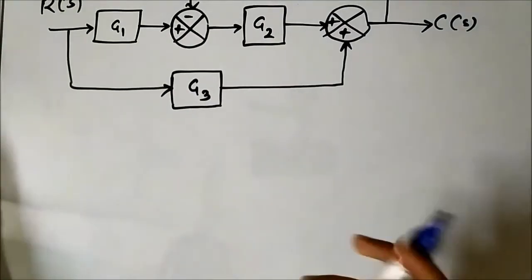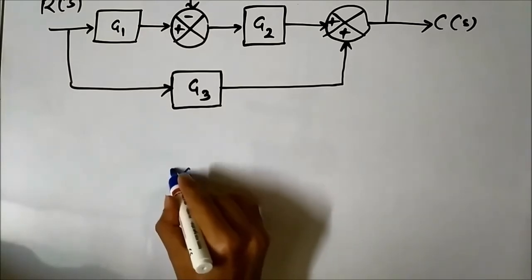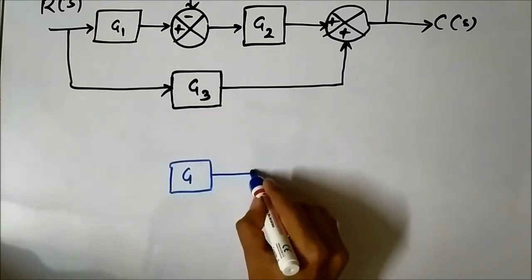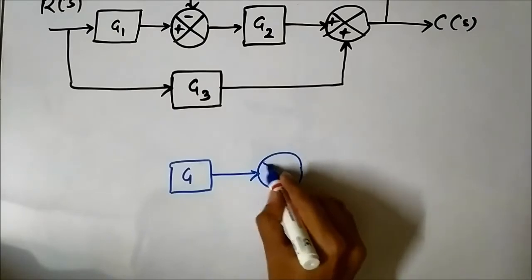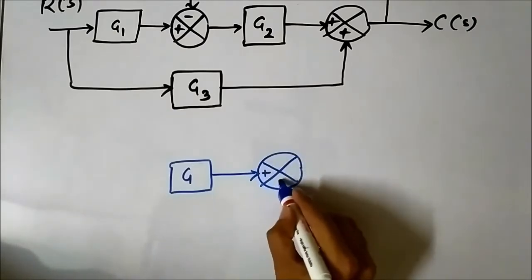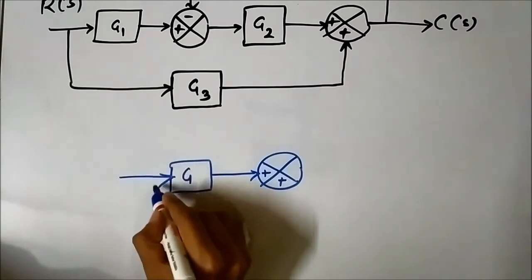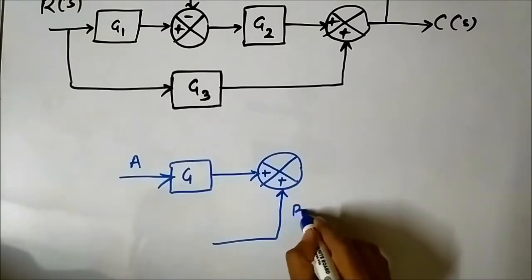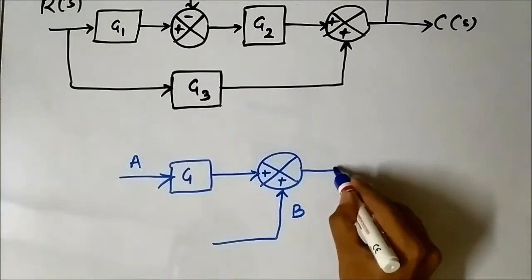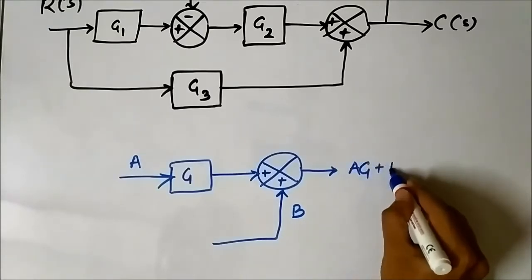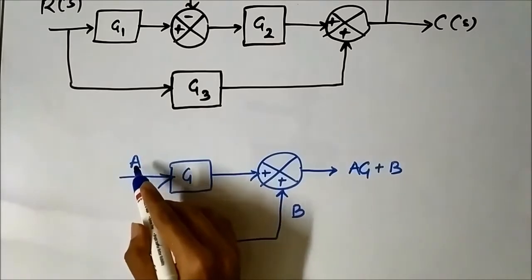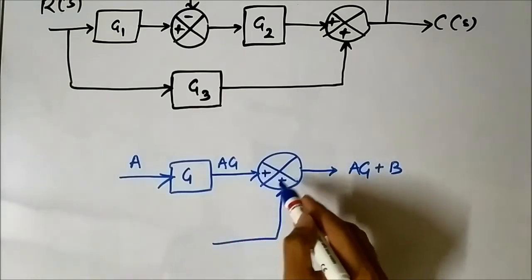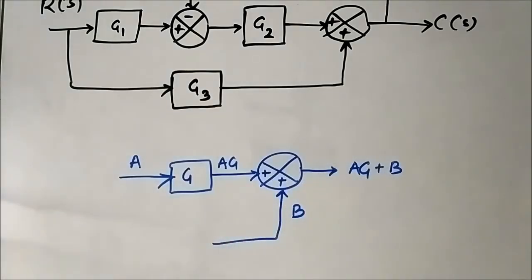Let us understand how we have to do it. Let us say this block is g and we have this summer here. Let the signal value to the block be a and let the bottom signal be b. Now the output of this summer is a·g plus b — when signal a is applied to g, the output is a·g, so a·g plus b.